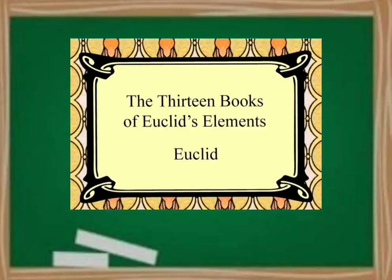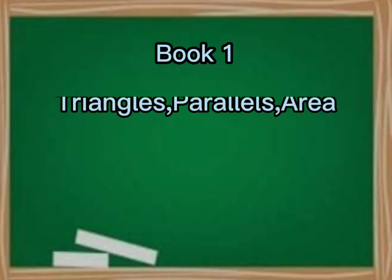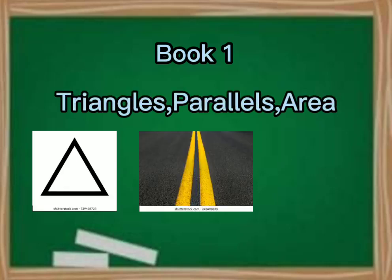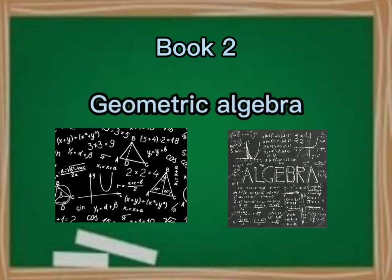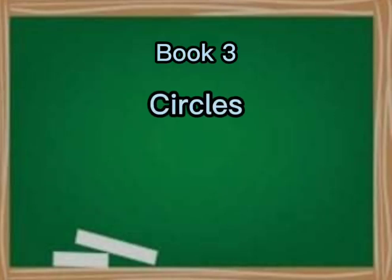There are 13 books of Euclid's Elements. For book 1, it discusses triangles, parallels, and area. Book 2, geometric algebra. Book 3 is about circles.